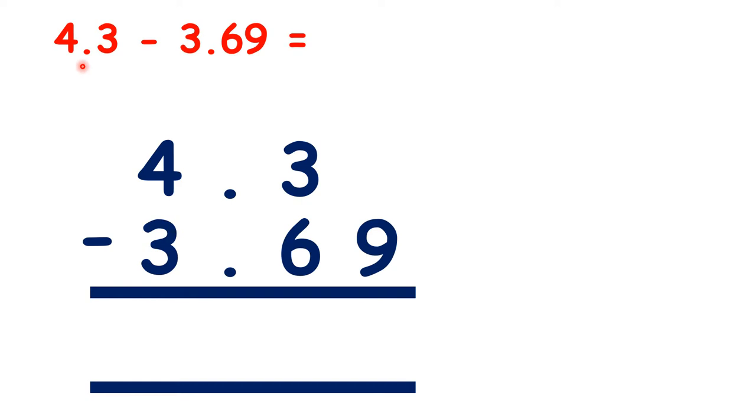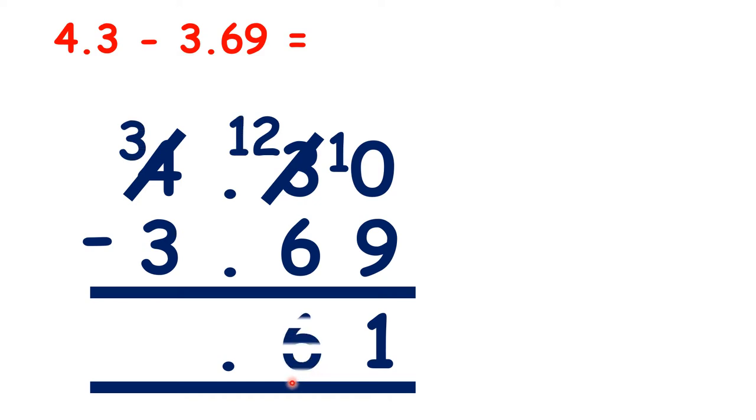So what is 4.3 minus 3.69? We copy down the decimal point, and because there's an empty space in the hundredths column in the first line of our question, it's important to write in a zero so that we can subtract as normal to get our answer 0.61.